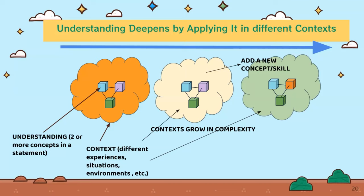On the left-hand side, the boxes represent the ingredients — two or more concepts in a statement. The clouds are the context: different experiences, situations, or environments — like the recipes. Different clouds represent different recipes, and the contexts grow in complexity as we change to different recipes, the same way different contexts grow in complexity in the classroom.